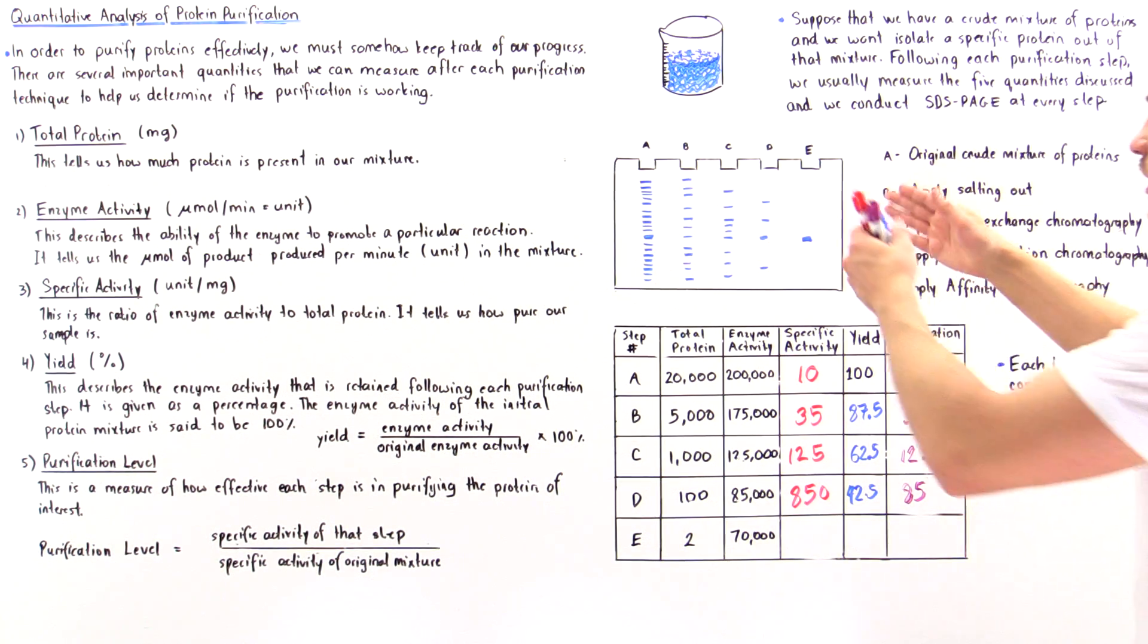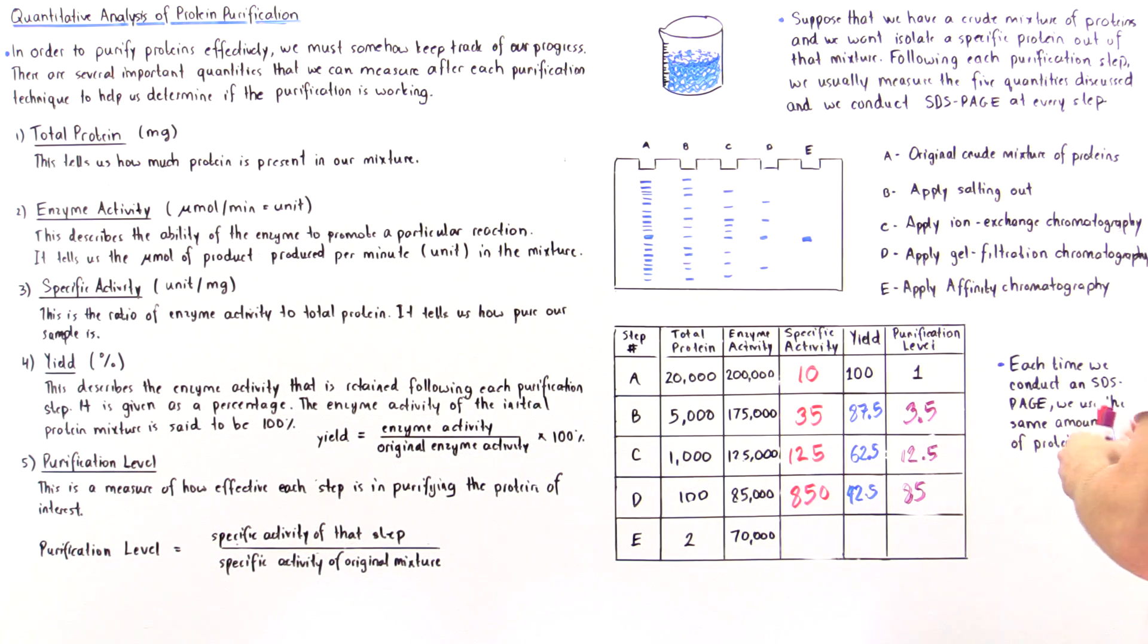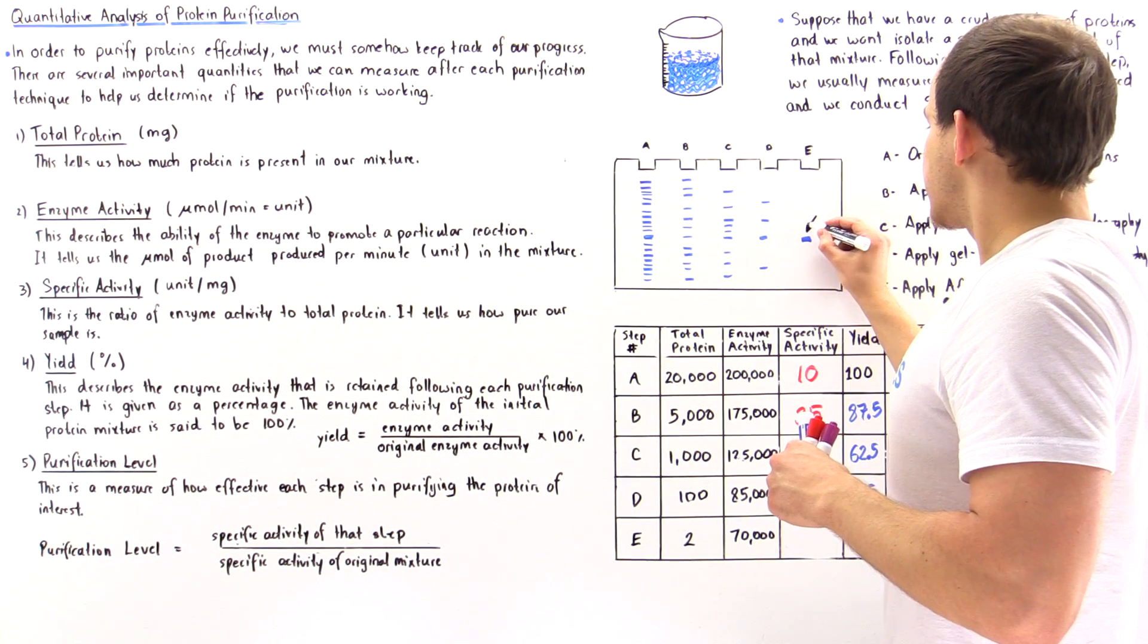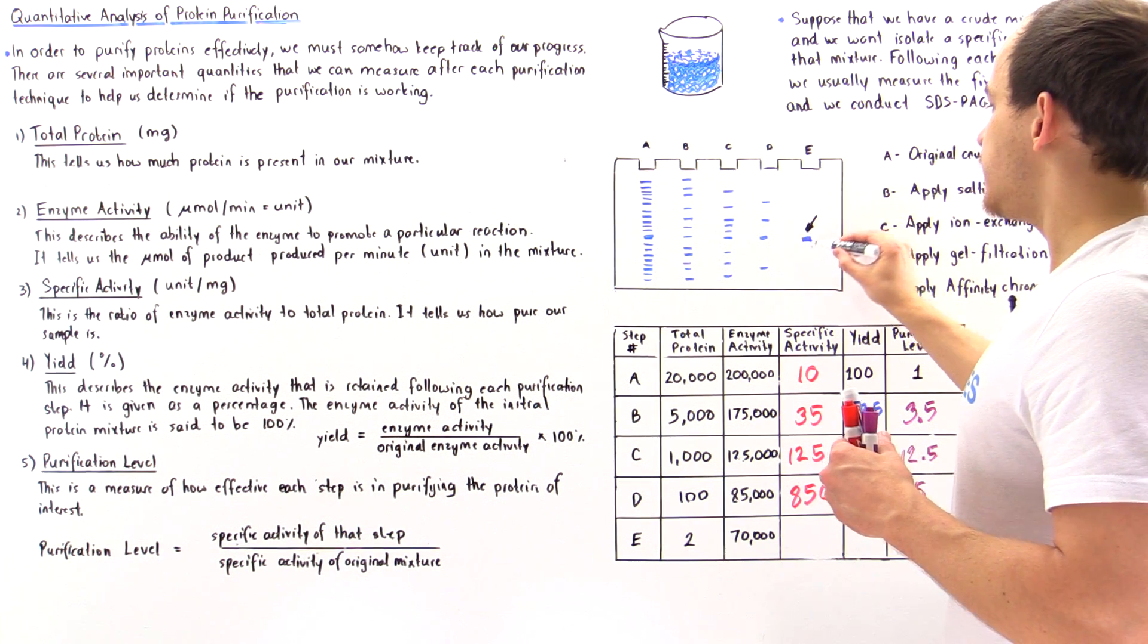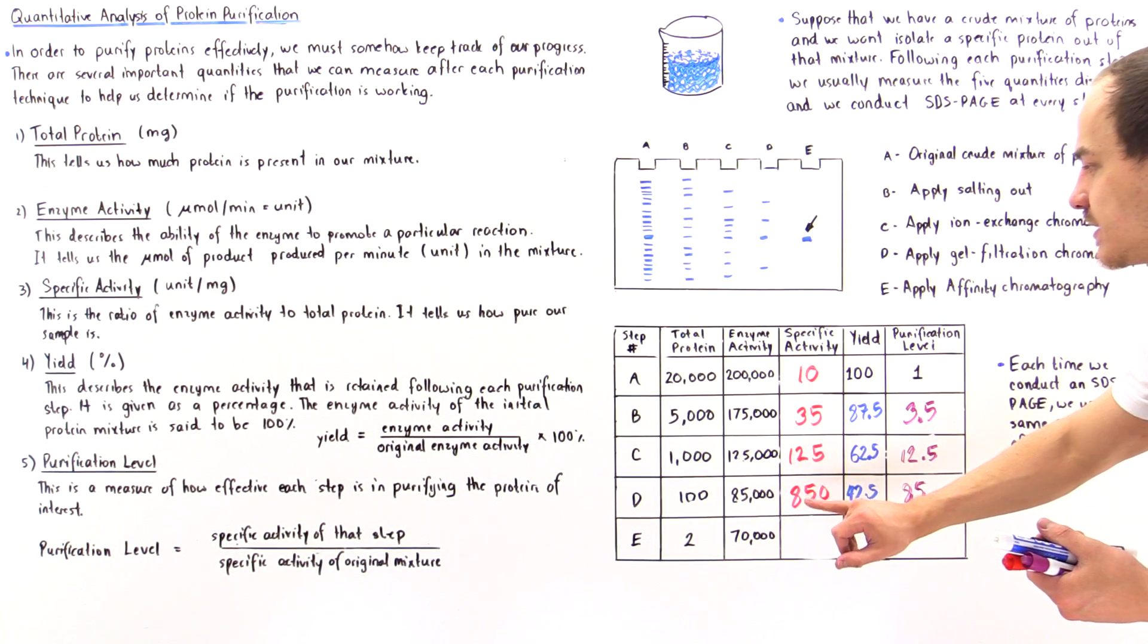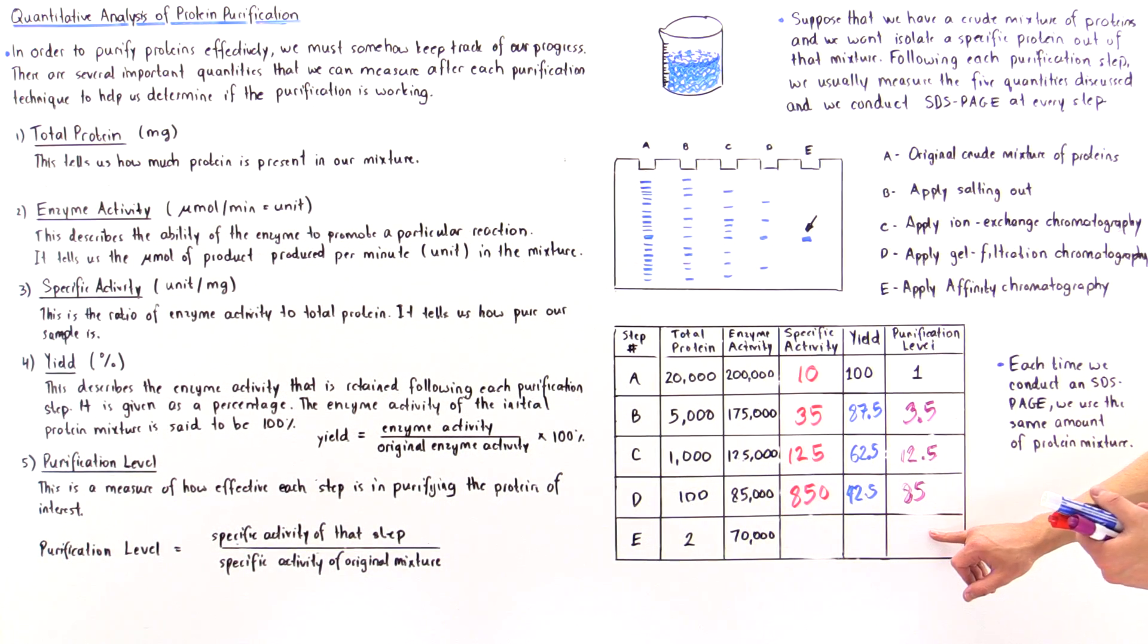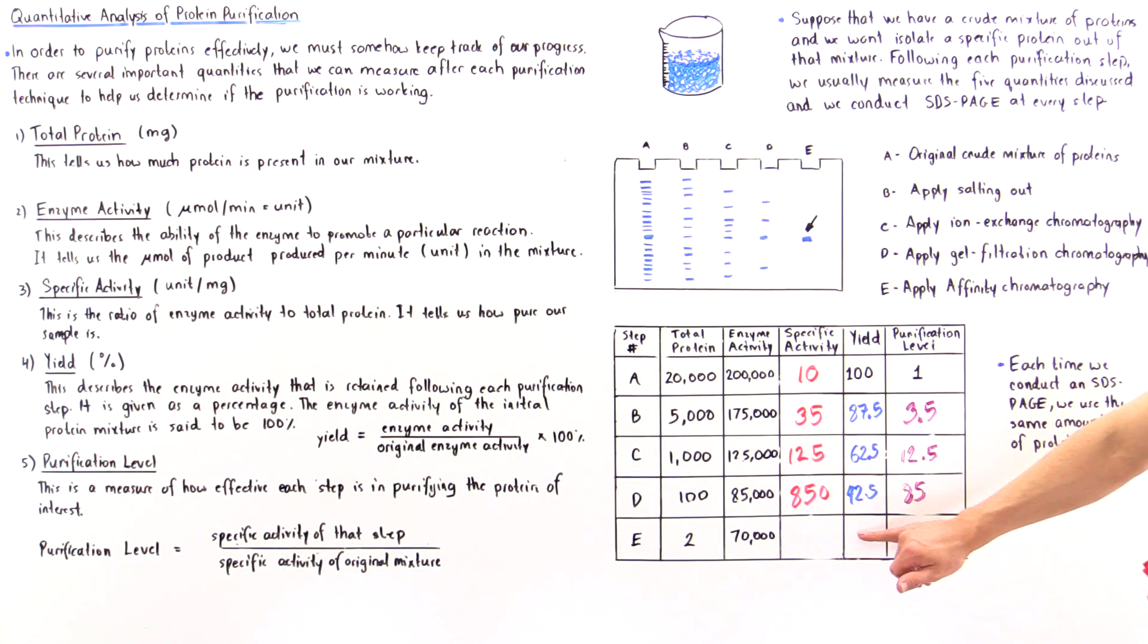This basically means we have successfully isolated that protein, a single type of mass. Let's see that the specific activity increases, and let's make sure that the yield didn't decrease by too much. If we have at least 30 percent, that is a good procedure.